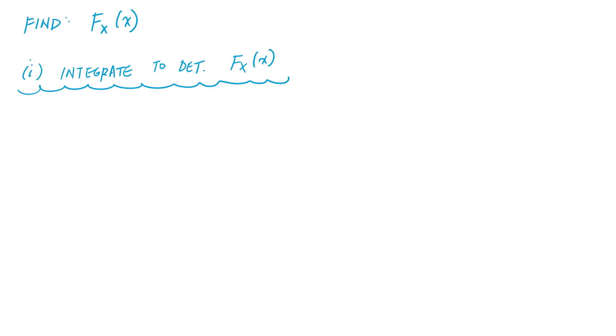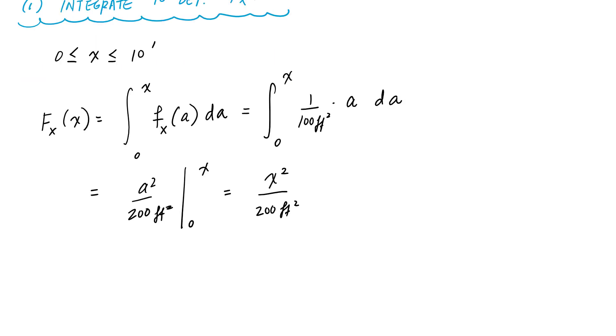So here for the first segment or the first portion of that PDF between 0 and 10 feet, this CDF is going to be the integral from 0 to x. I'm going to use a dummy variable, so it'll be whatever the PDF is as a function of a as my dummy variable. And so this would look like I'm integrating 0 to x and this equation is only going to apply between 0 and 10 feet and it's going to be 1 over 100 feet squared times a da. And when I integrate, this is my CDF of x for that first segment between 0 and 10 feet.